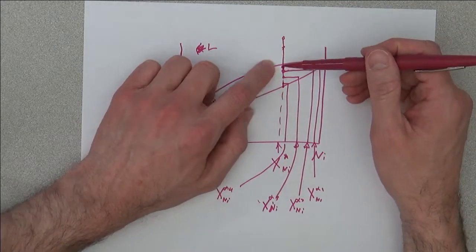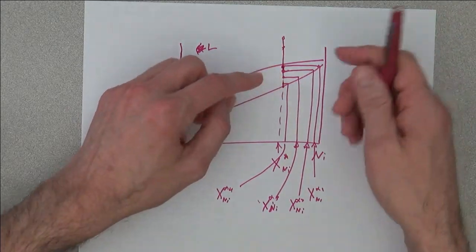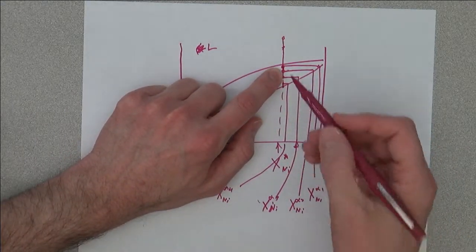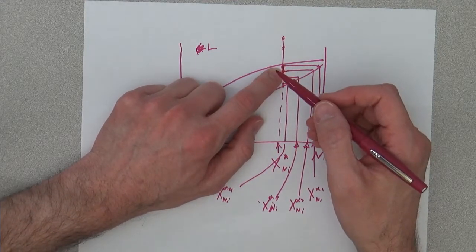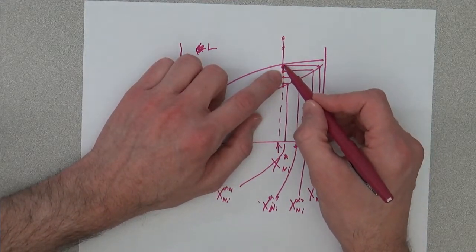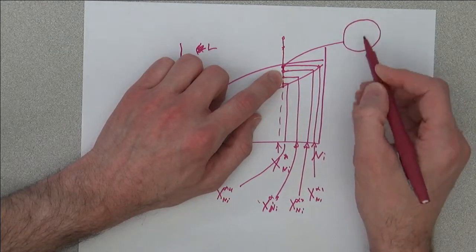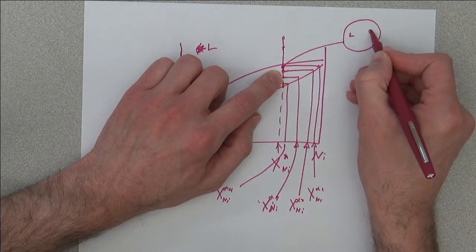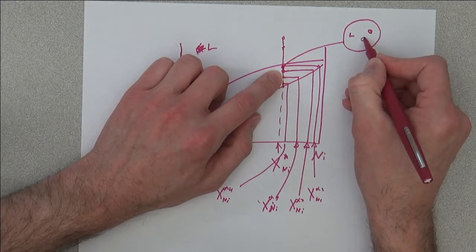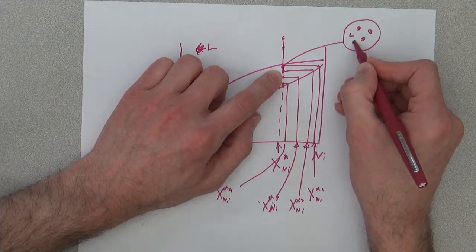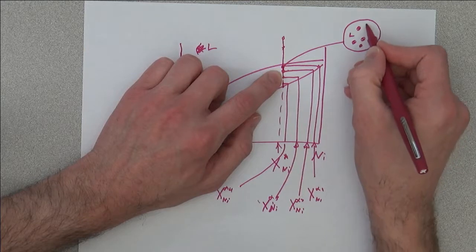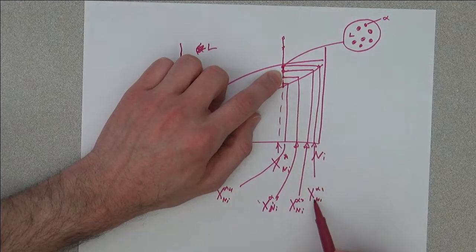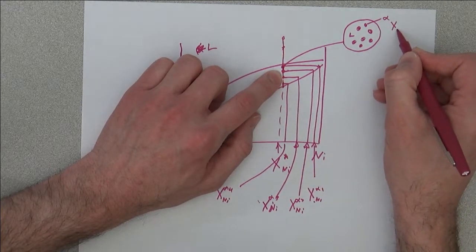But if we don't allow that, if we cool at a moderately rapid pace, then what's going to happen is we will get liquid and we will get little nuclei of alpha phase that have the composition X_Ni alpha 1.